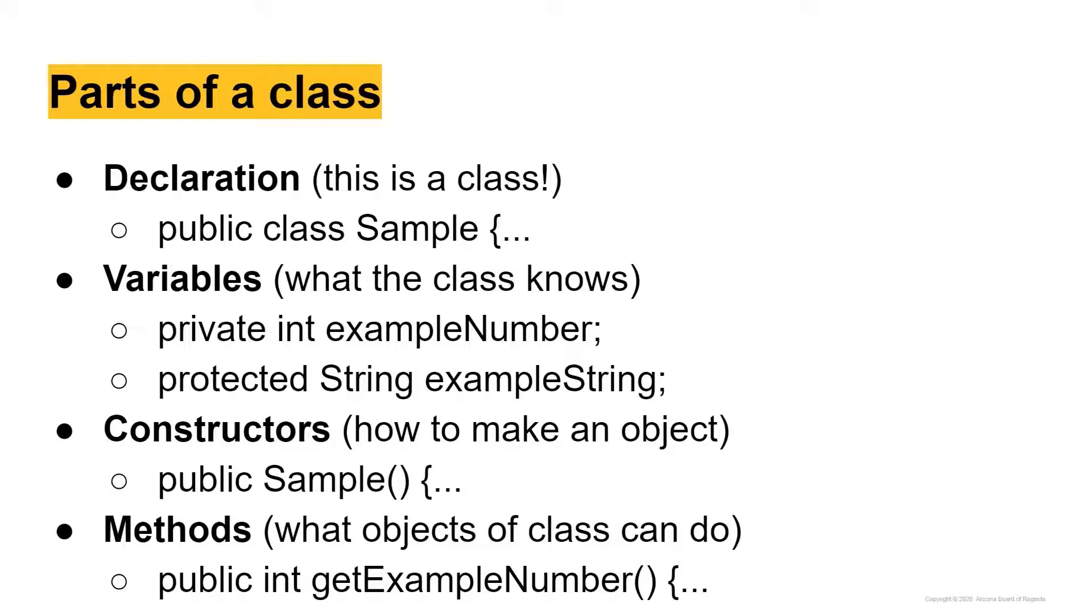So, and then protected, which you see down here with this example string, protected string, example string. This means that only other classes that are children or in the inheritance structure of the current class that we're talking about, any class derived from it,